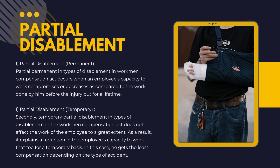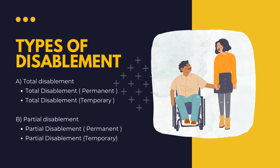Temporary partial disablement under the Workmen's Compensation Act does not affect the work of the employee to a great extent; it refers to a reduction in the employee's capacity to work on a temporary basis. In this case, the employee can receive the least compensation depending on the type of accident. For example, a data entry operator with a fracture in his left hand may find his work capacity reduced temporarily, but only for the duration of recovery, which is referred to as temporary partial disablement.